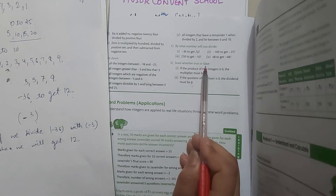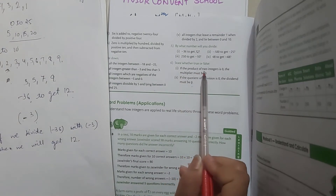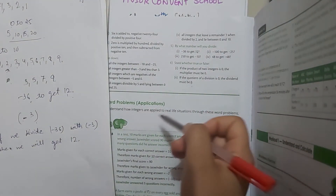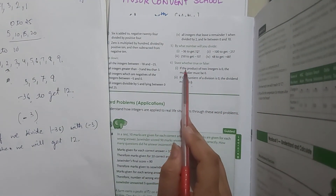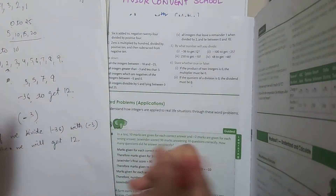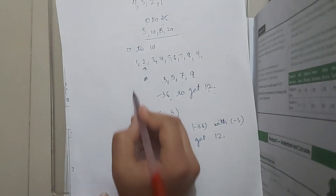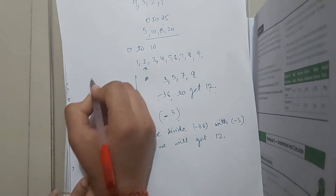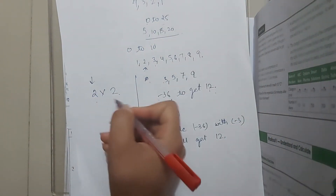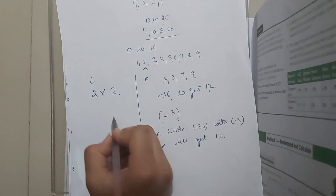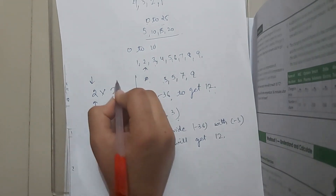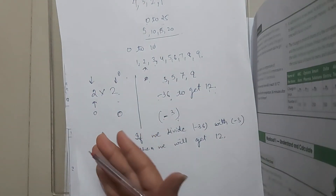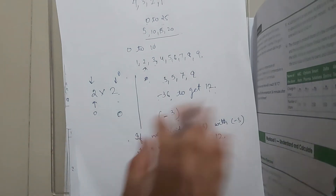Next: state whether true or false. If the product of 2 integers is 0, then the multiplier must be 0. We have two terms: one is the multiplier and the second is the multiplicand. You can choose either as multiplier or multiplicand. So if the answer is 0, the multiplier can be 0 OR the multiplicand can be 0. Our answer is FALSE — because either the multiplier or the multiplicand can be 0.